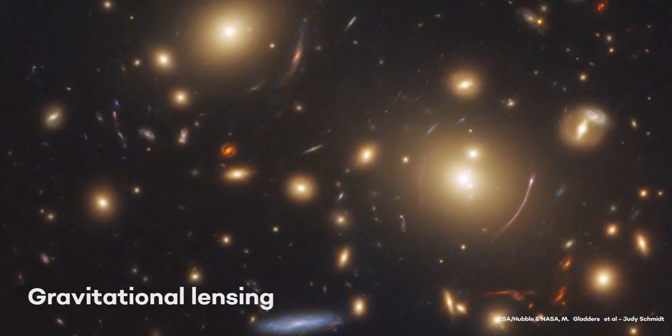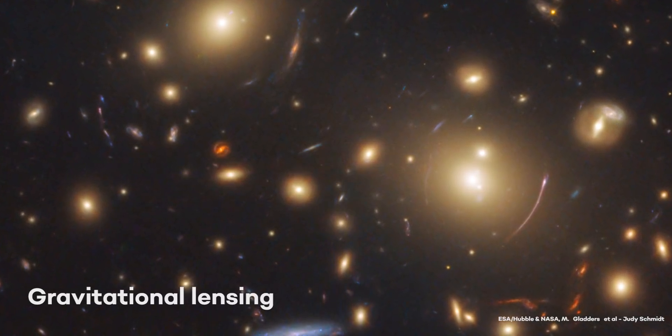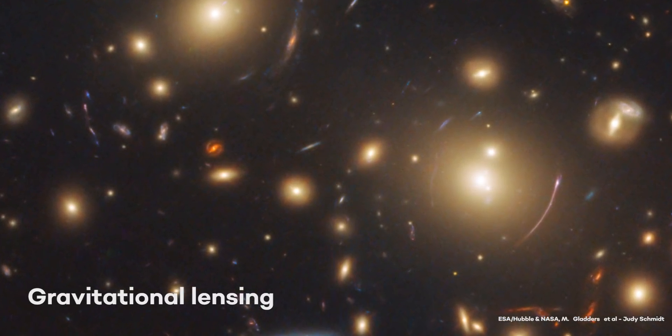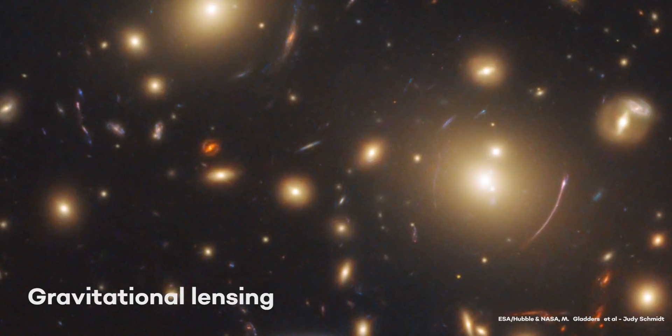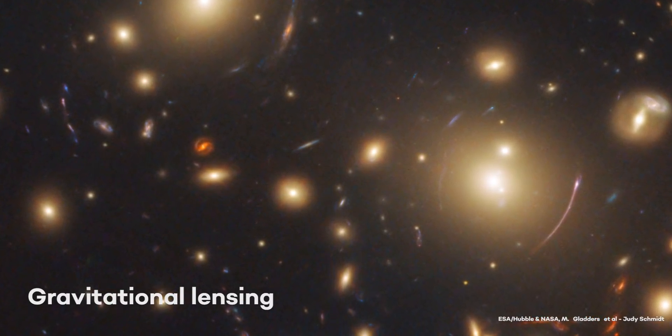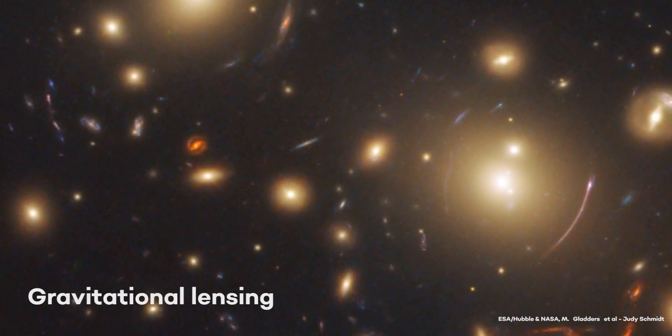If there is enough mass between our line of sight and the background galaxy we are attempting to study, the light can be warped, stretched out into many images, and most crucially magnified. In an ideal alignment, these background objects can appear tens or hundreds of times brighter than they would without the intervening mass, which acts as a gravitational lens.